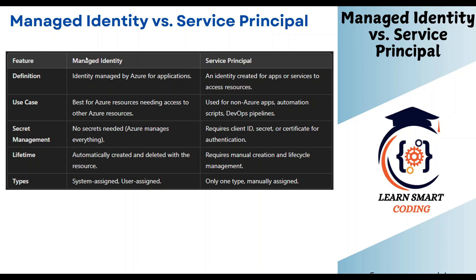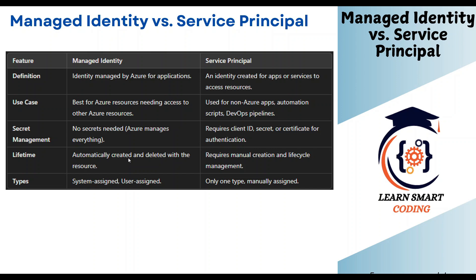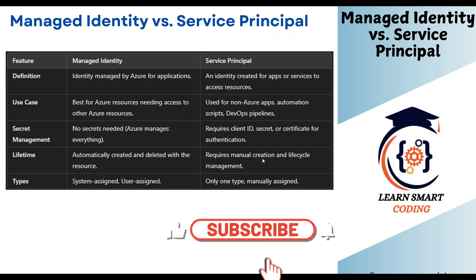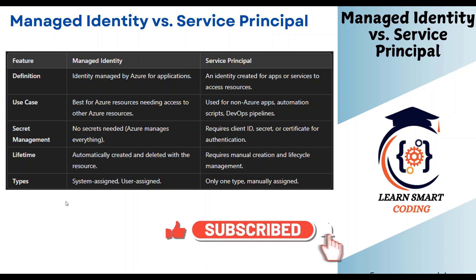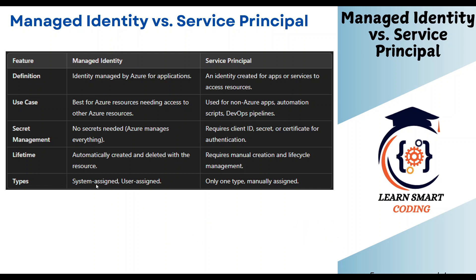In terms of lifetime, whenever a resource has its own managed identity and that resource is deleted, the managed identity associated with it is also gone. But for service principals, you have to manually create and delete — that's the lifecycle management. For managed identity there are two types: system assigned and user assigned. But for service principal, there is only one type, which is manually assigned by us.